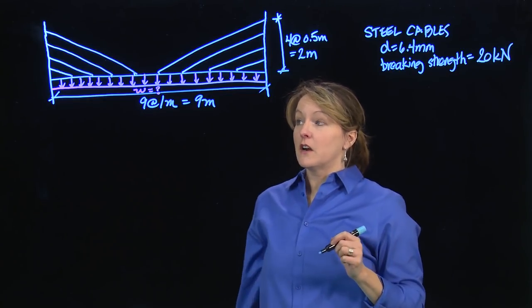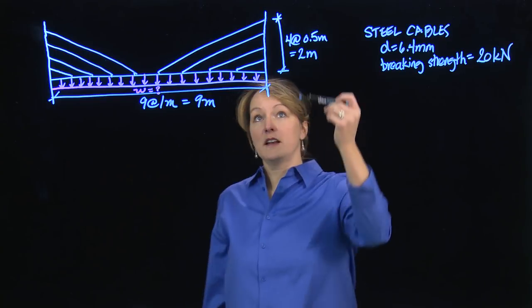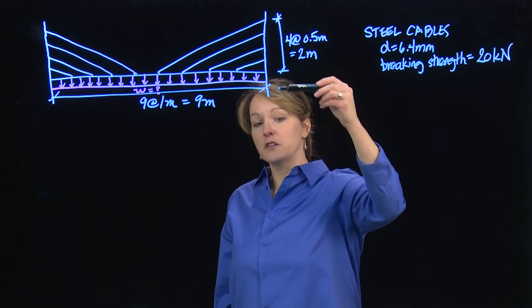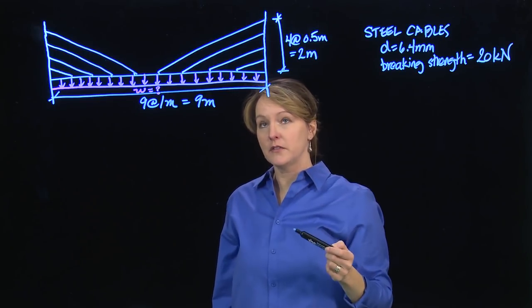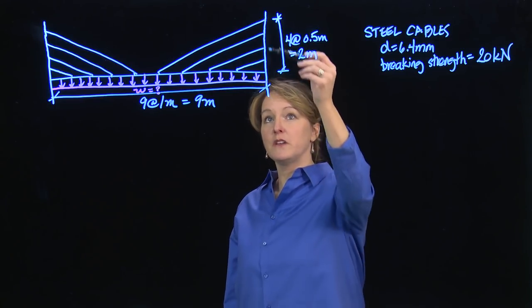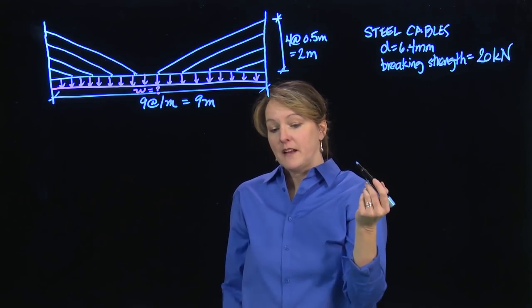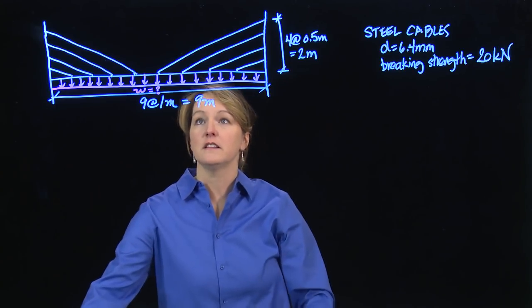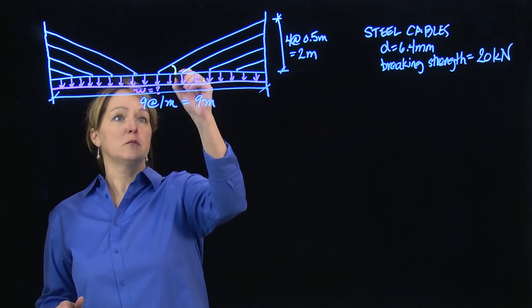Now I will use what's called a harp design. The nice thing about a harp design means that we have even distribution of the cables along the height, in this case the height of the tree, or it would be the tower of the bridge. So we have equal spacing. The nice thing about that in this bridge is that these angles are all going to be the same, so that's going to simplify our life a little bit.